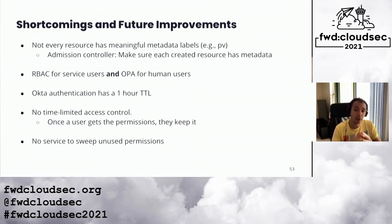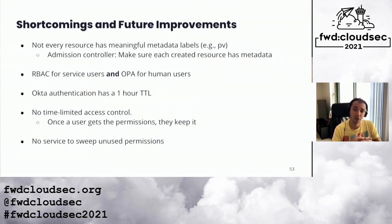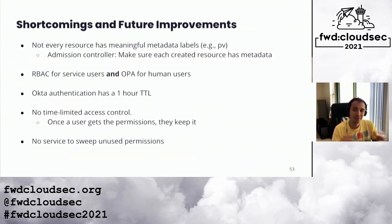Another shortcoming is inconsistency in authorized actors — we use OPA for human users, which are the majority, but we use RBAC for service users. In our roadmap, we are planning to migrate service users to OPA-based authorization. The Okta authentication has a one-hour TTL, and while that's actually good for our security posture, we do receive complaints from users who have to re-enter their password every hour.